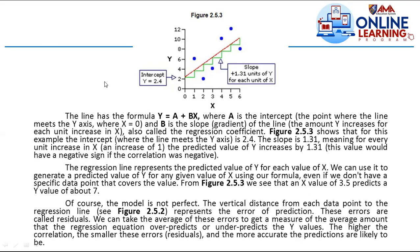We have a positive slope when the line goes upward, a negative slope when it goes downward, an undefined slope for a vertical line, and a zero slope for a horizontal line. The line formula is y equals a plus bx, which is the same as y equals mx plus b. Where a is the intercept — the point where the line meets the y-axis where x is equal to zero.